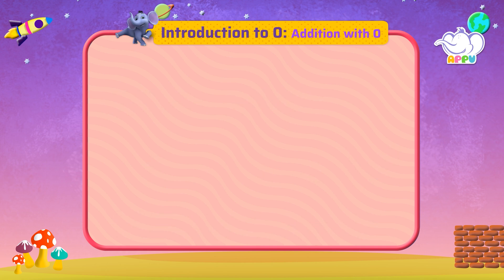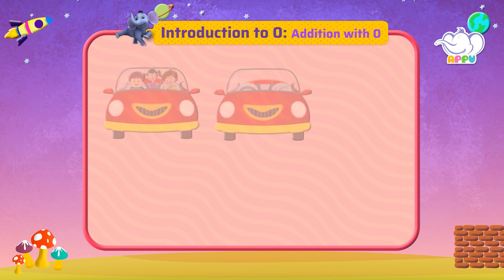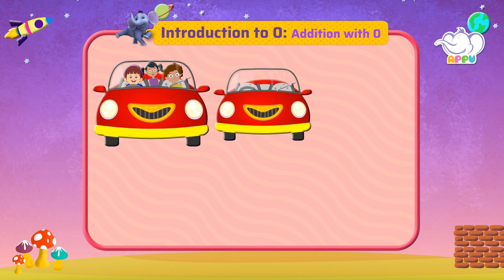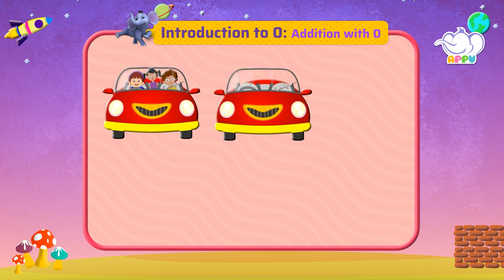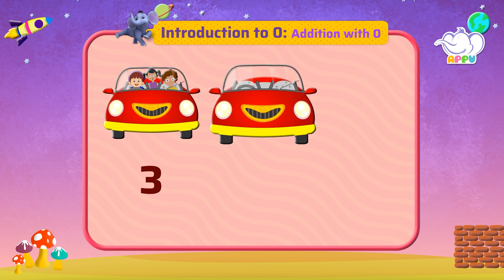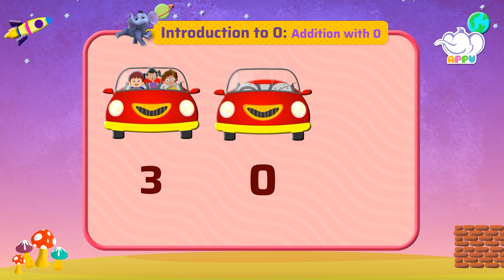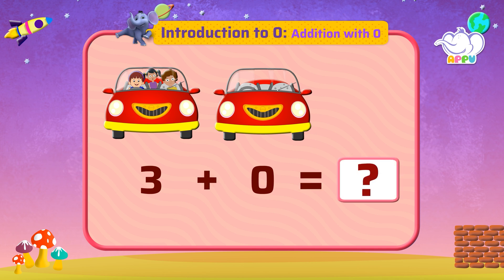Add zero and write the number. We have three children in this car. We have zero children in this car. How many children do we have altogether? We have three children in all.